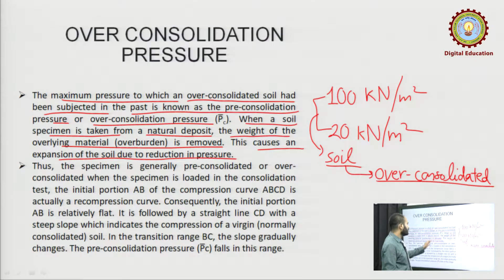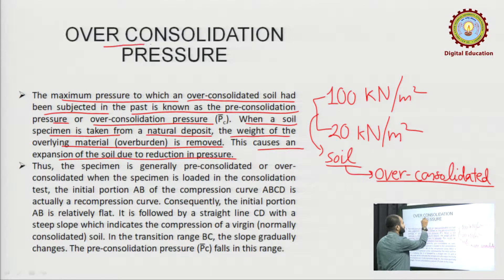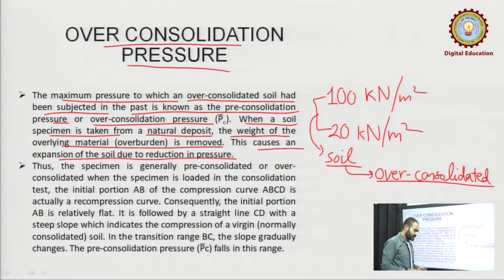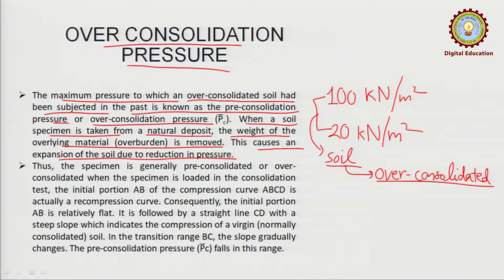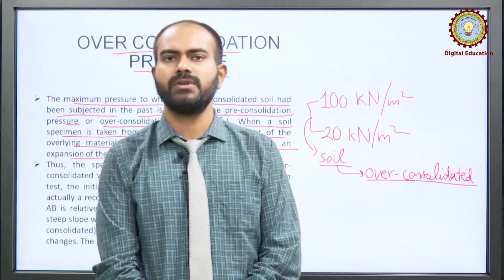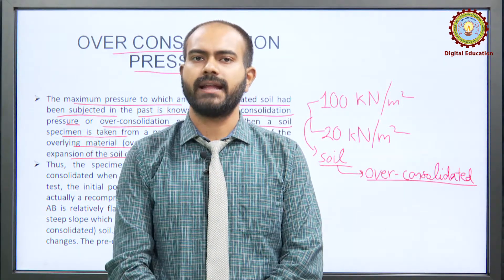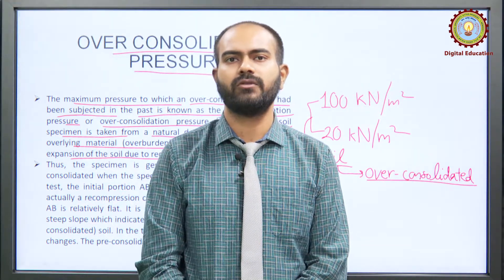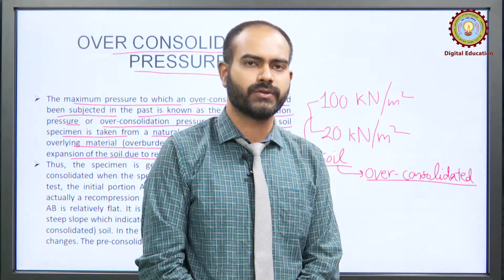The over-consolidation pressure is the maximum pressure which the soil had experienced in the past — that amount of pressure which it had experienced in the past, due to which it has now become an over-consolidated soil.